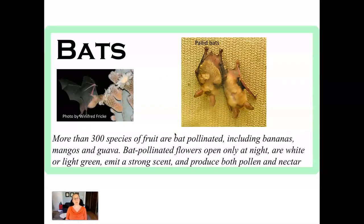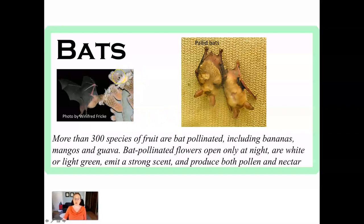Bat-pollinated flowers — and we're talking about nectar- and pollen-seeking bats, not fruit bats — tend to be flat and white with a very strong, beautiful sweet scent. Bats get up inside the flower and get pollen all over their fuzzy bodies, then fly long distances between plants. These cactus flowers, for example, may only be open for a single night, but have really large white petals that absorb moonlight and emit a very strong scent detectable for kilometers.